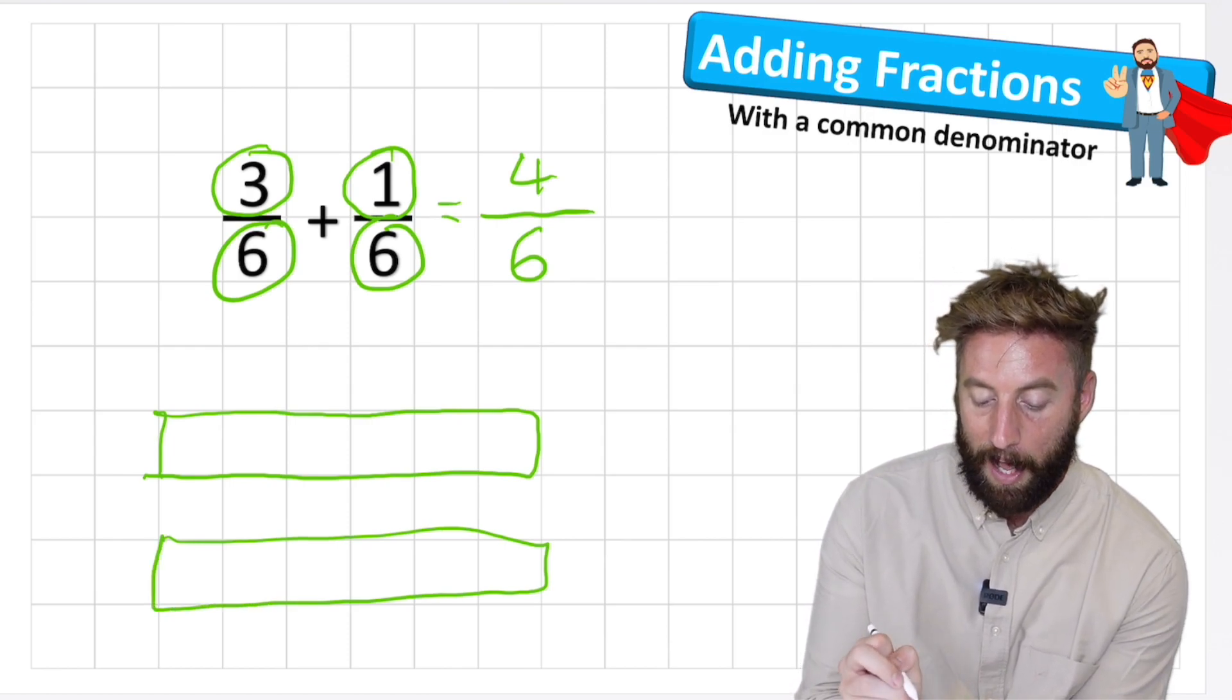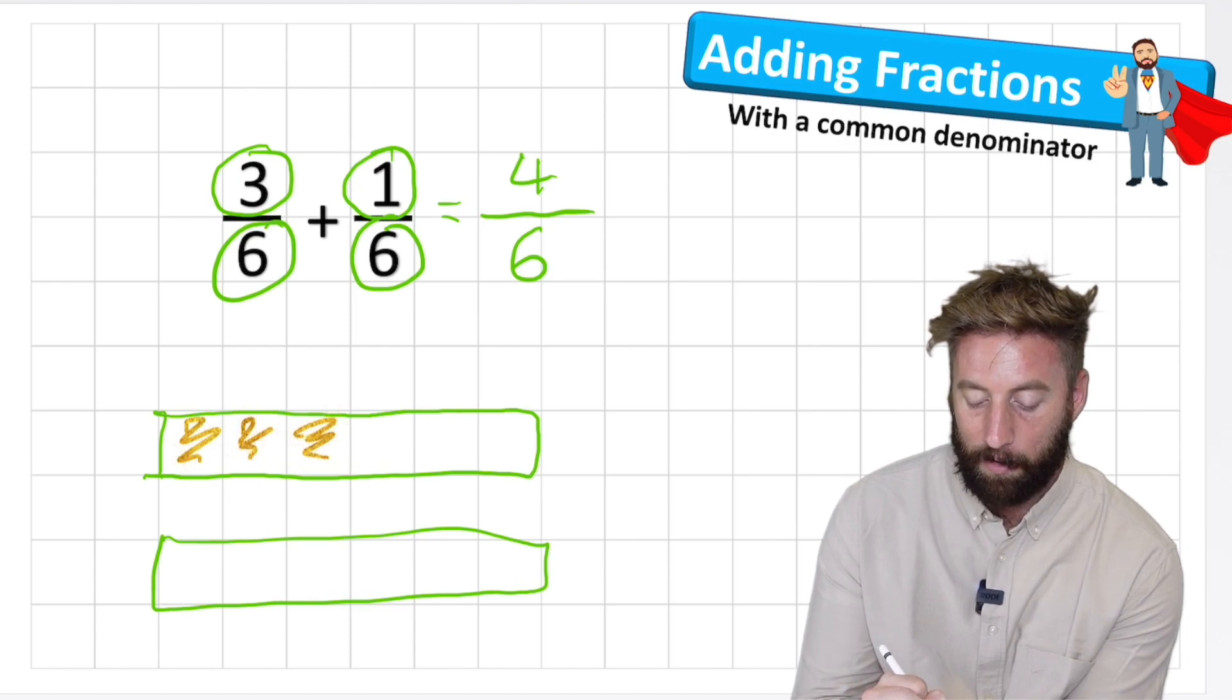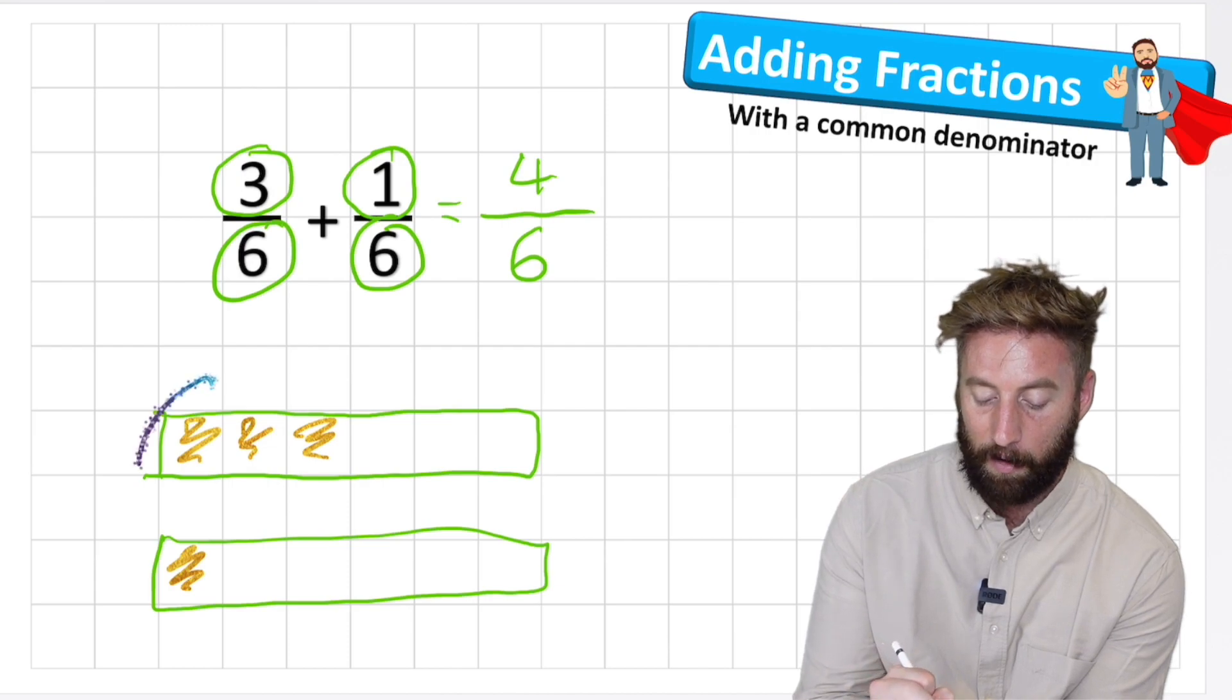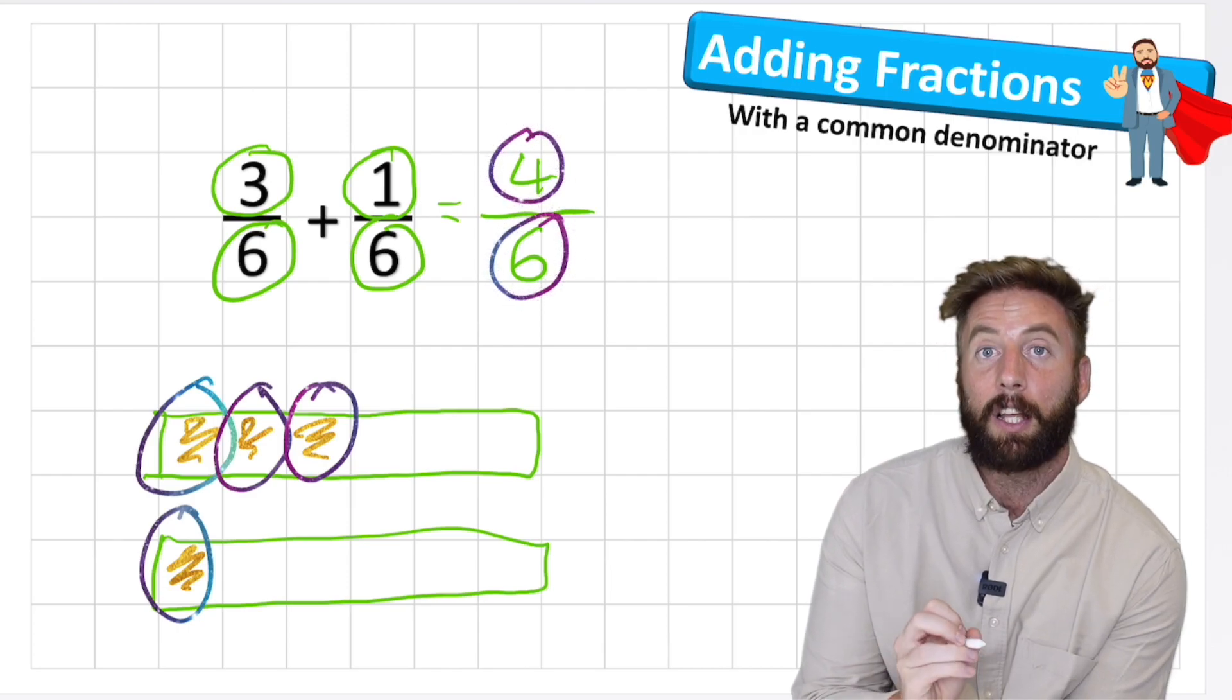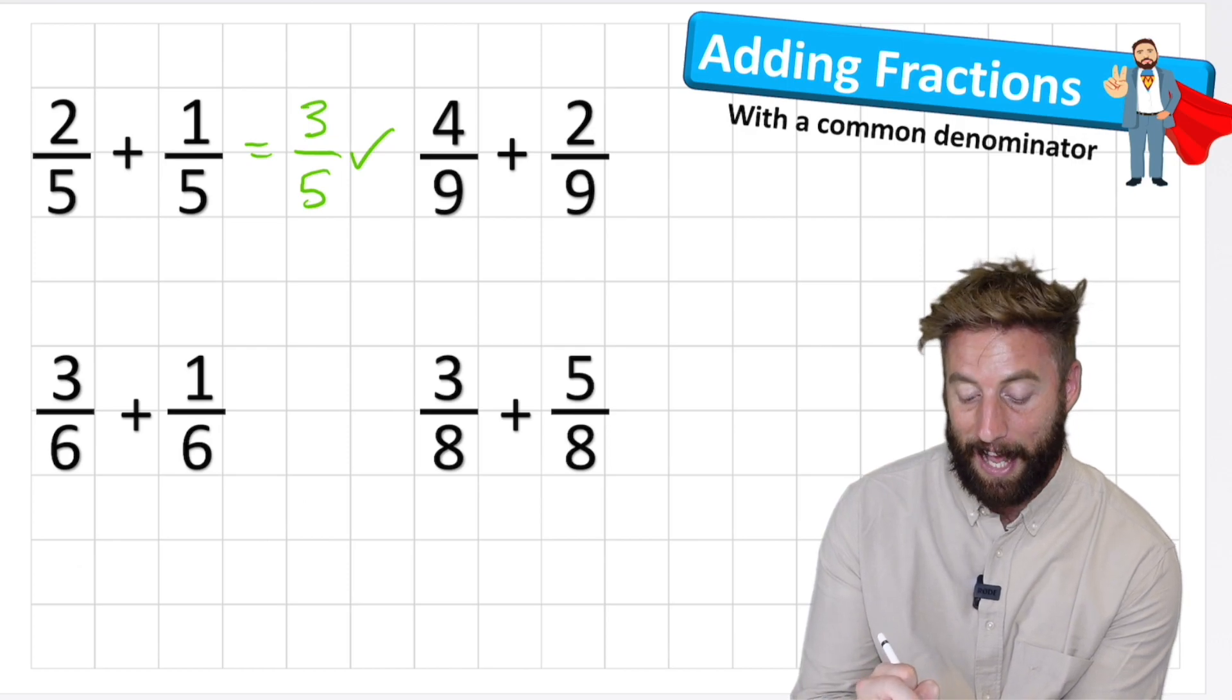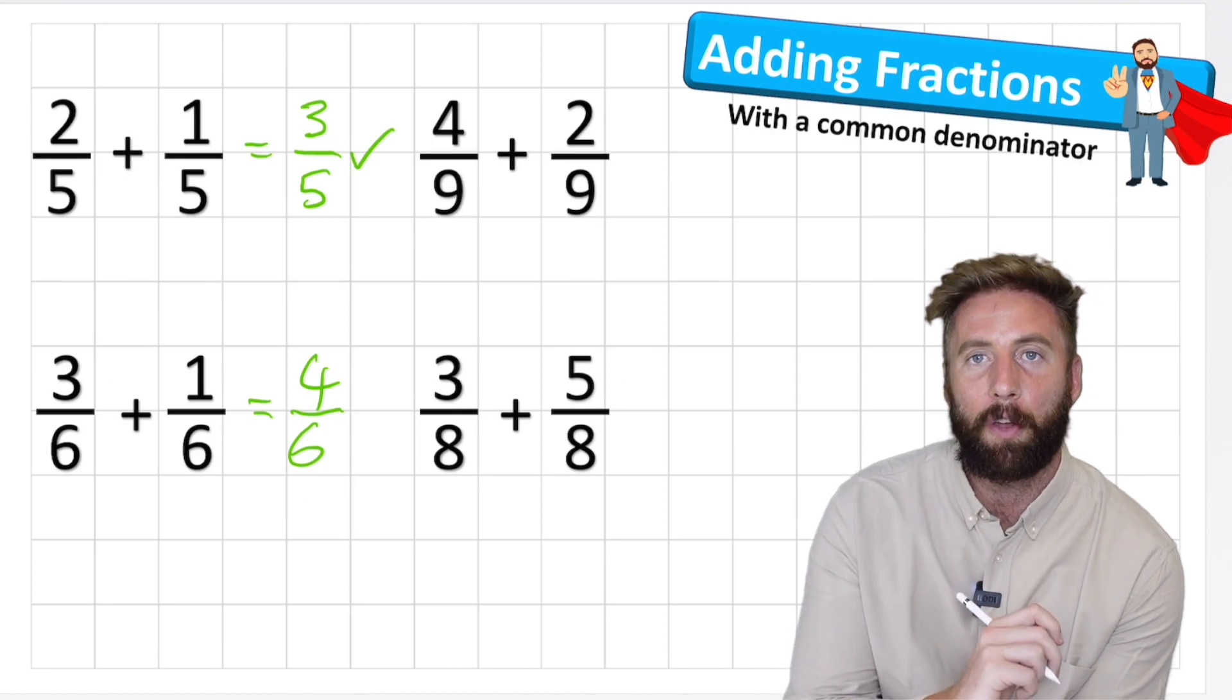But on my first one I have one, two, three, and in my second fraction I only have one sixth. How many do I have? All together I have one, two, three, four sixths. So my answer to question two, three sixths add one sixth, equals four sixths. But hold on,